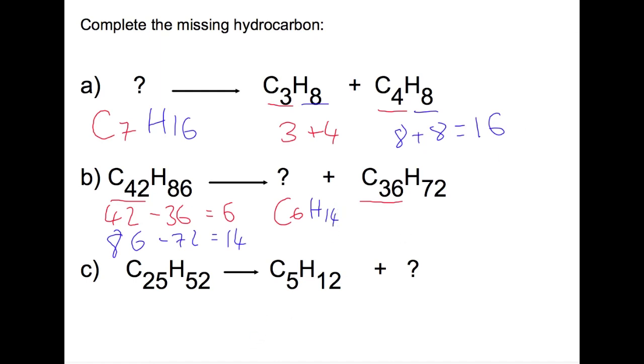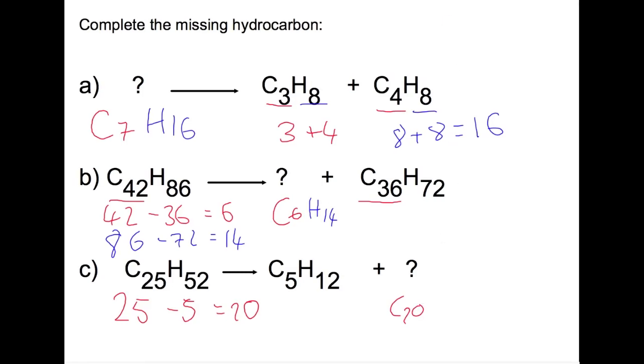In our final example we start with 25 carbons. One of our chains that we produce has 5 which means the other chain must have 20 carbons. We start with 52 hydrogens. One of our chains has 12 hydrogens which means that our second chain has 40.